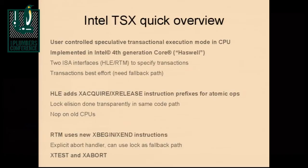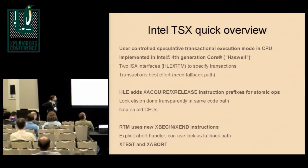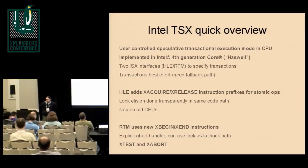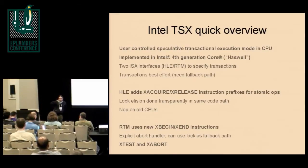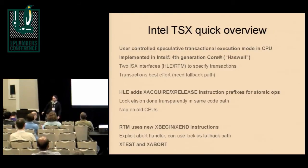Here is a very quick overview of TSX. There's a new speculative mode in the CPU which you can enable and disable, implemented in the fourth-generation Core. It's currently shipping in CPUs — right now available in clients, and in the future in servers. There are two ISA interfaces called HLE and RTM to specify transactions. The important part is transactions are best-effort, a kind of fast path — they don't always work, there's no guarantee a transaction commits. You always need some kind of fallback. You can't really do a completely new algorithm; you can just make an existing algorithm faster.